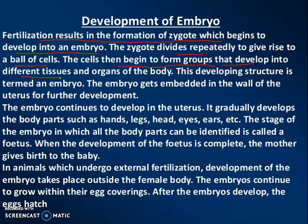Groups of cells form into different tissues. These tissues form into organs, and the body is gradually formed. The zygote divides rapidly, becomes a ball-type structure with many cells, then the cells convert into tissues, and tissues convert into organs. This developing structure is termed an embryo.